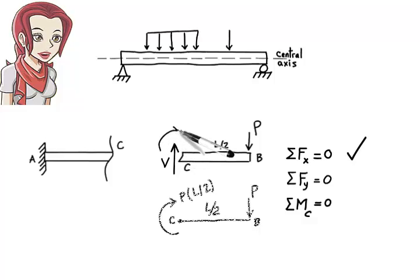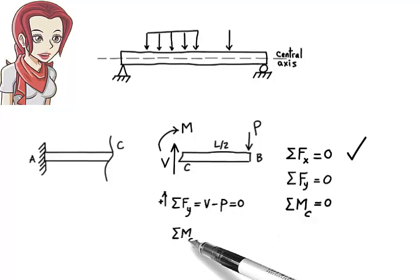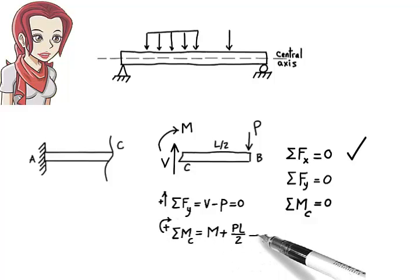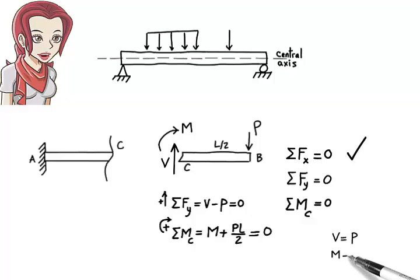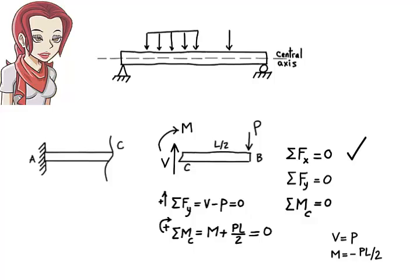Let's denote the bending moment at point C as M. Solving for the two internal forces, we get V equals P and M equals negative P times L over 2. We can conclude that when a beam is subjected to a transverse load — a load perpendicular to the beam's central axis — two internal forces develop in the beam: a shear force and a bending moment.